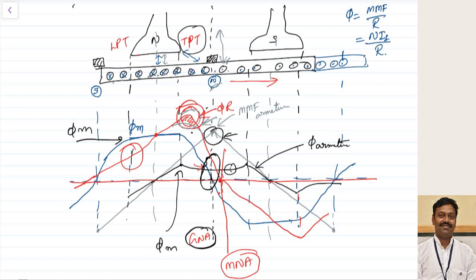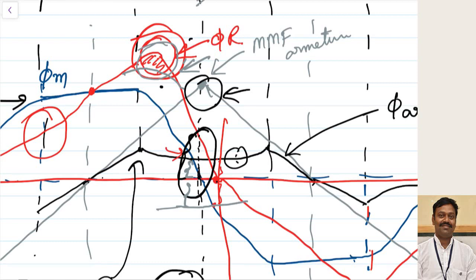The solution is to make the resultant flux uniformly distributed and equal to zero at the geometrical neutral axis. Since the resultant flux is the sum of main field flux and armature flux, and the main field MMF is already zero at the GNA, we want the armature flux to be zero there. This can be done by keeping extra field windings that counterbalance the armature flux — this is done using interpoles.